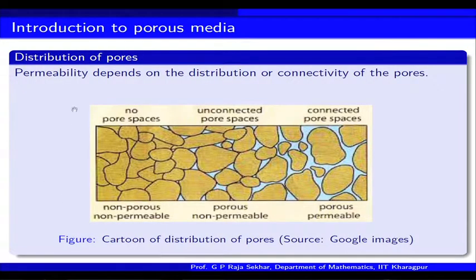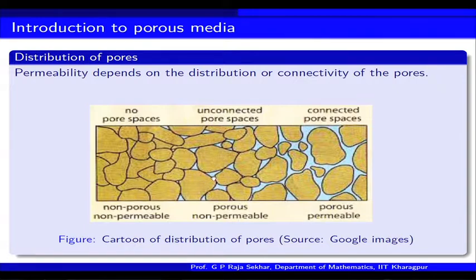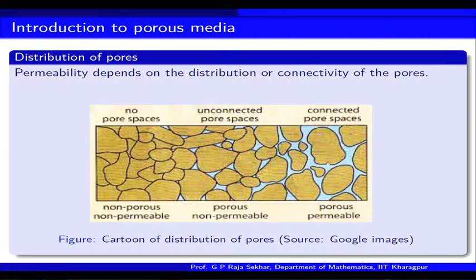The pore distribution depends on connectivity. Some configurations have no pore spaces; some have pore spaces but they are not connected — so if there is flow it cannot go through because the pores are not connected. In other cases pores are connected. There is a general theory depending on the granule packing structure from which you get different permeabilities, including lattice arrangements and corresponding relations, but we will not go into those details. This gives an idea about no pore, unconnected pore, and connected pore.